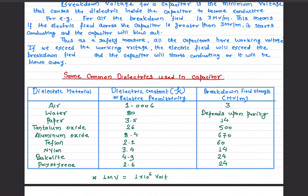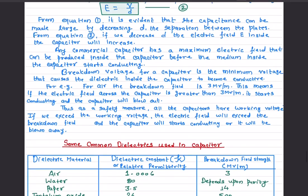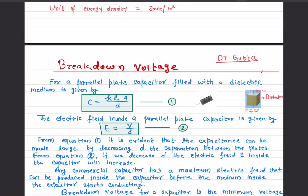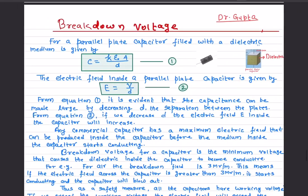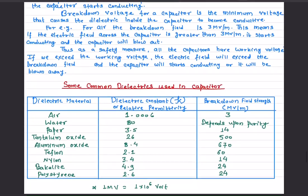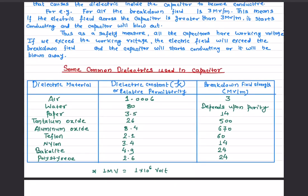This is the reason all capacitors have a working voltage and we should never exceed the breakdown voltage — if we do, the dielectric will start becoming conductive and the capacitor will blow away. That's it for the breakdown voltage. If you have any questions, write them in the comment section below and don't forget to subscribe. Thank you so much.